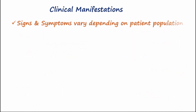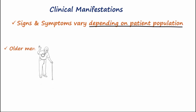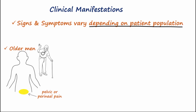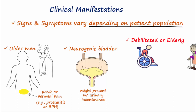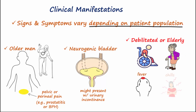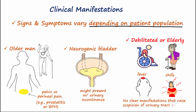The constellation of signs and symptoms tends to vary for each patient population. For older men, their spectrum of UTI presentation includes pelvic and perineal pain, suggesting cystitis that is likely attributed to prostatitis or BPH. By contrast, individuals with neurogenic bladder might present with urinary incontinence. Please remember that debilitated or elderly patients often present with generalized nonspecific symptoms that might suggest an infection, such as fever and chills, but without clear manifestations that raise suspicion of an infection localized to the urinary tract.